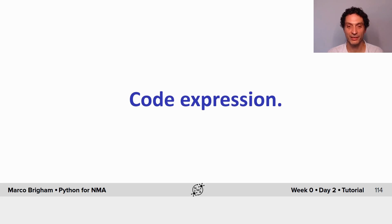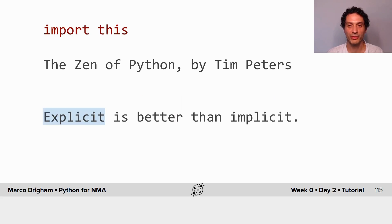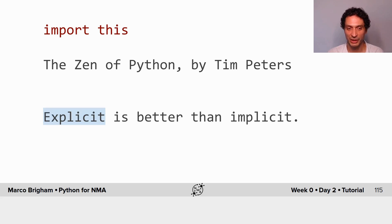We're almost at the end of our lecture — let's talk about code inspection. You can borrow from the module called 'this': import this, and then you have the Zen of Python by Tim Peters. I picked up a few that I think are very important and relevant for someone starting in Python and coding in general. Whenever given a choice, it's better to be explicit than implicit — don't assume something happens; explicitly show or write that it happens.